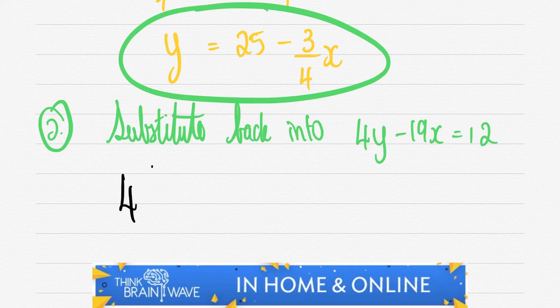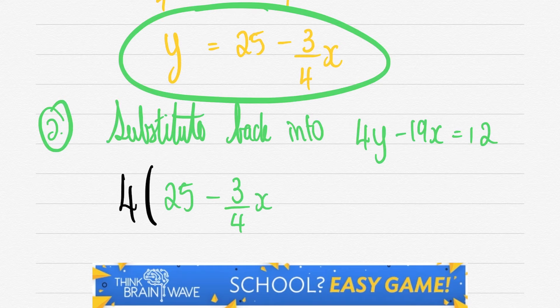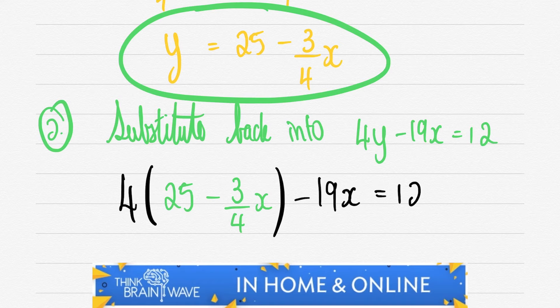So wherever we see a y we need to put 25 - 3/4x. So we have 4(25 - 3/4x) - 19x = 12.